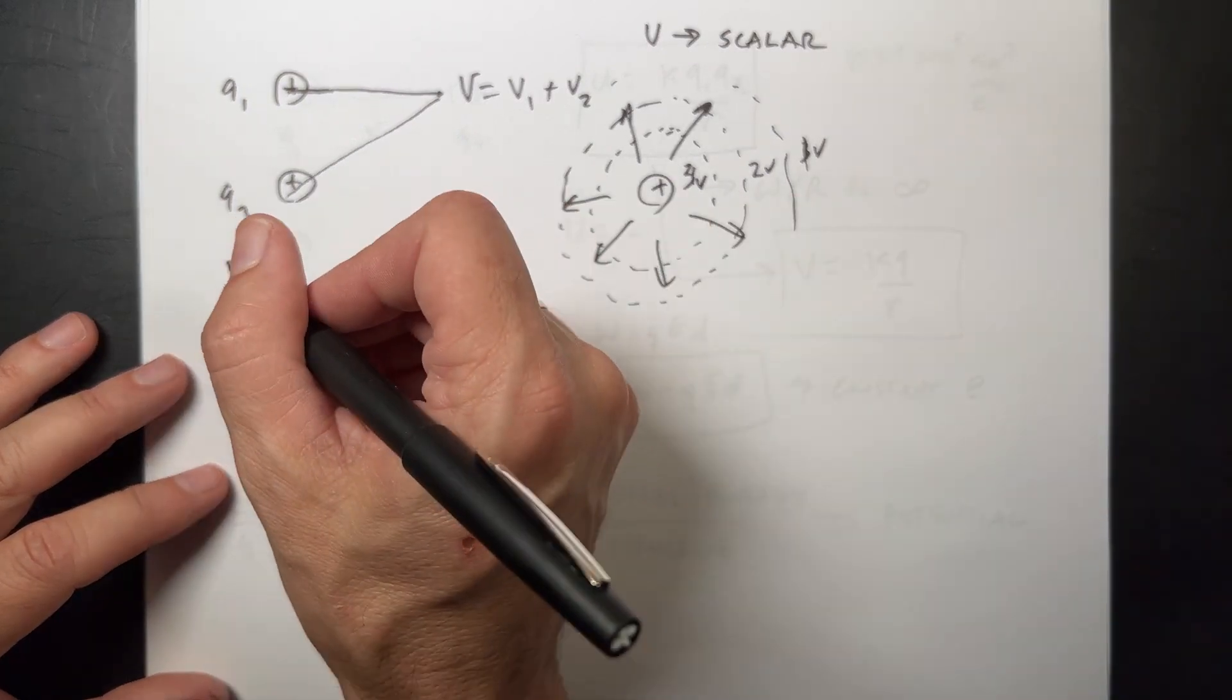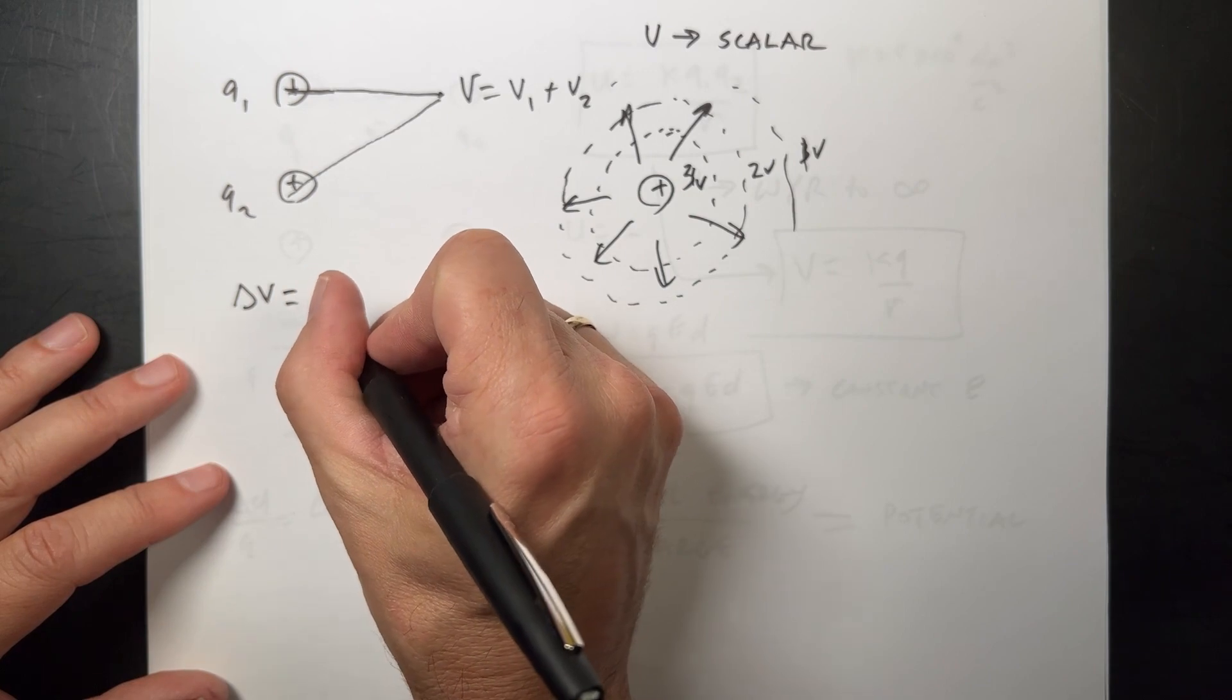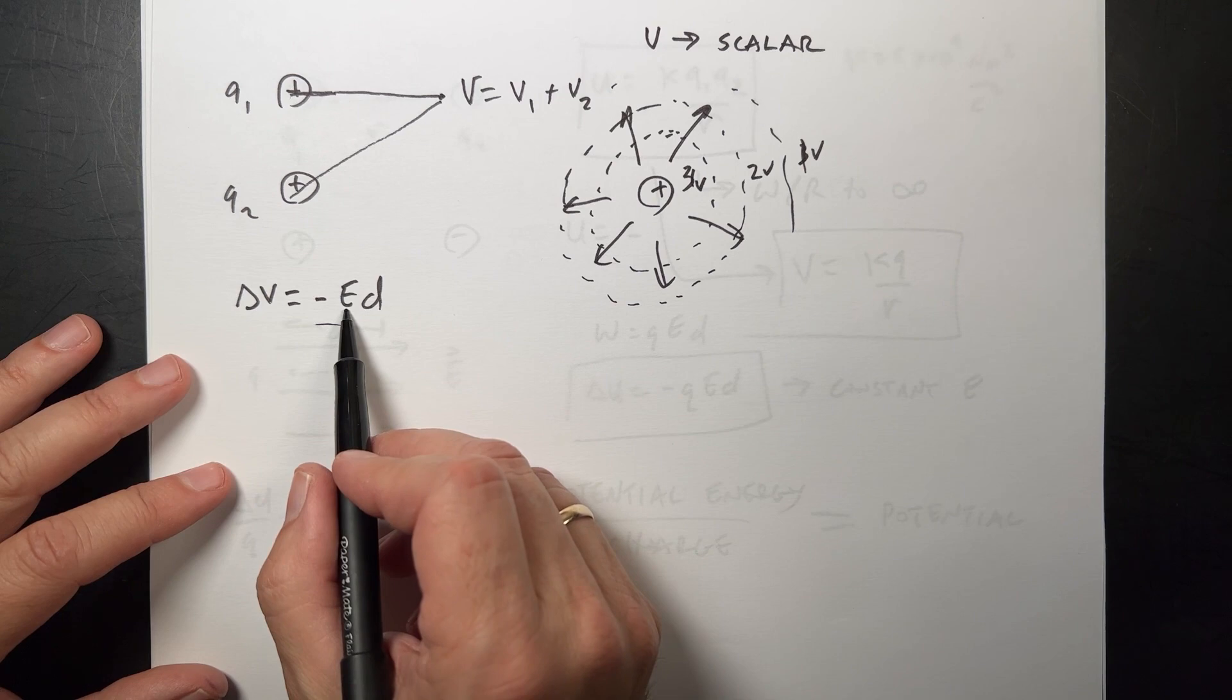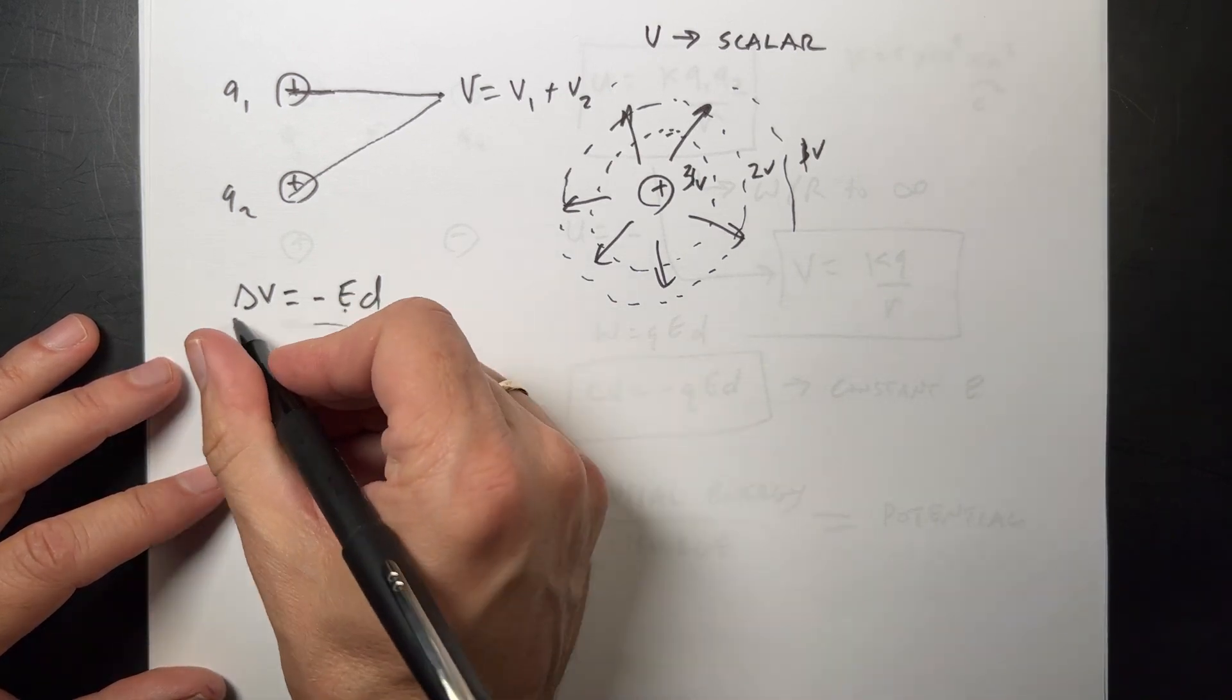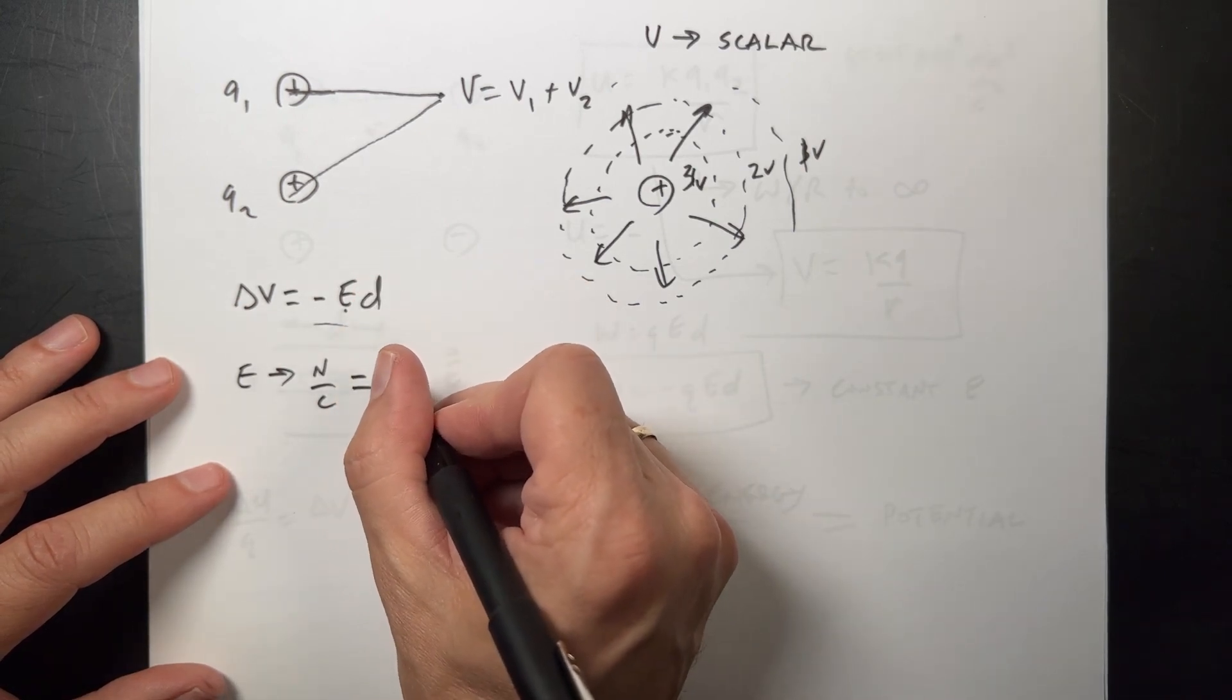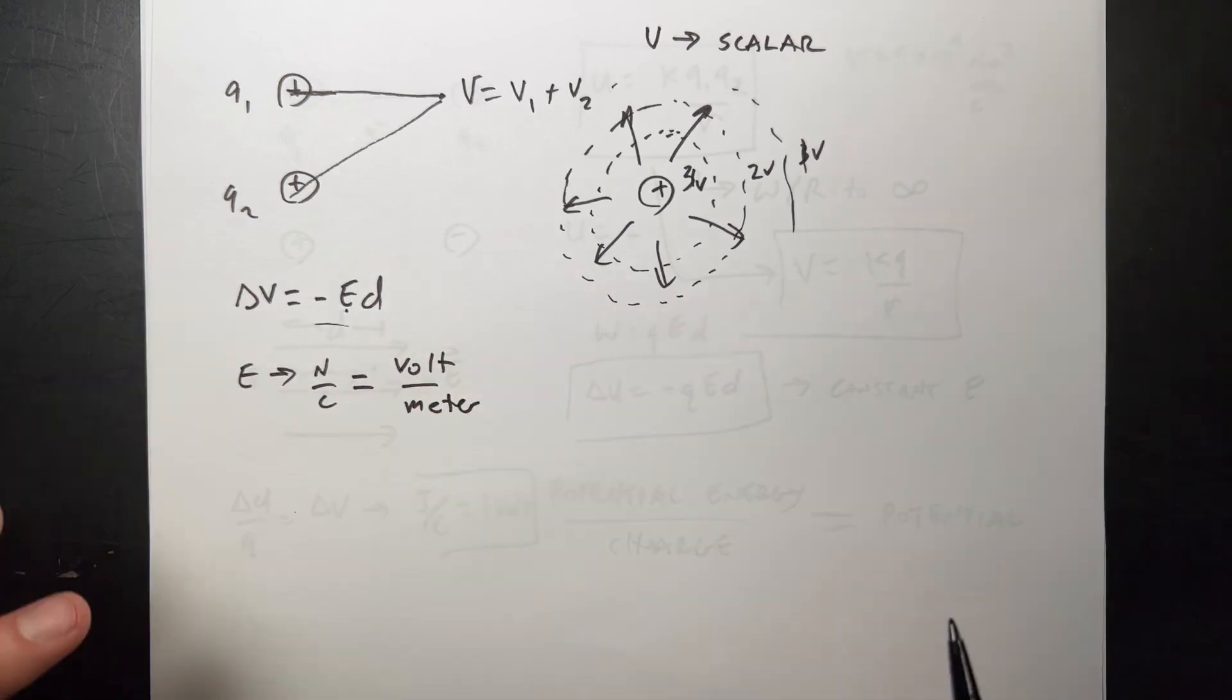One thing though, is that I can say the change in potential for a constant electric field is negative E D. We already said that. And if electric field is in newtons per coulomb, but this is in volts, and we divide by meters, a newton per coulomb is a volt per meter. They are the same thing. That's kind of important.